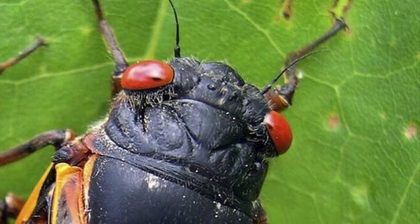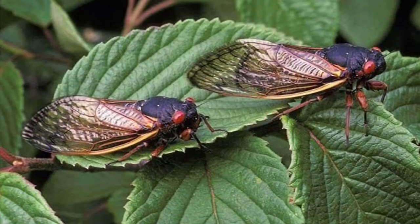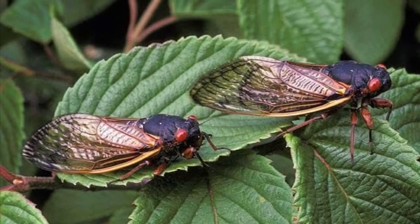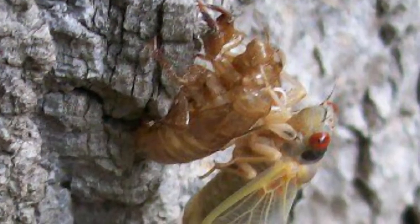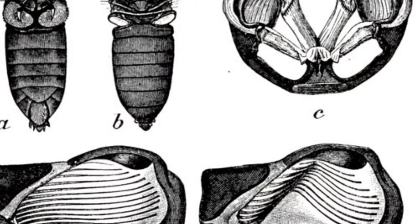After 17 years of life underground, trillions, that's right, trillions of cicadas will arrive this spring ready to sing. So how do they make their song? Well, the male cicada has a special pair of circular snapping plates which they bend called timbals.